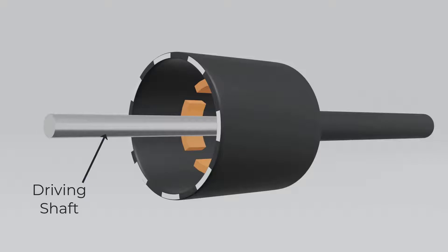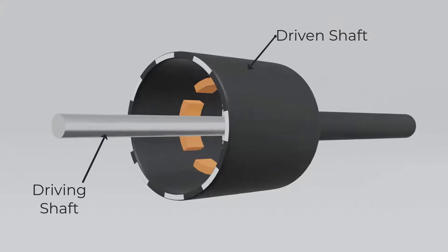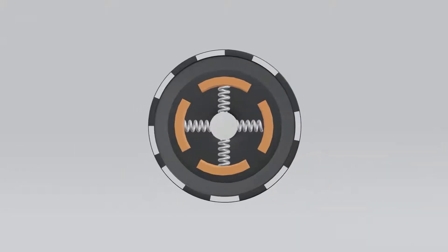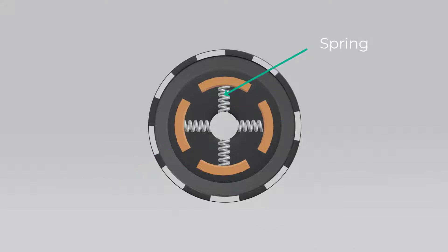The second part is the driven shaft, which is basically connecting to the tires assembly. Here you can see the pads that basically connect to the driven shaft to transmit the power, and the spring that is basically connected to the driving shaft and the pad.